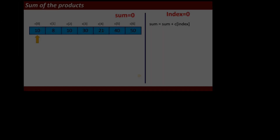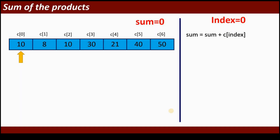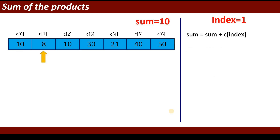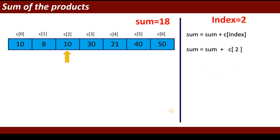To calculate the sum of the products, initially sum equals 0. At index 0: sum = sum + c[0], which is 0 + 10 = 10, stored in variable sum. At index 1: sum = sum + c[1], which is 10 + 8 = 18.